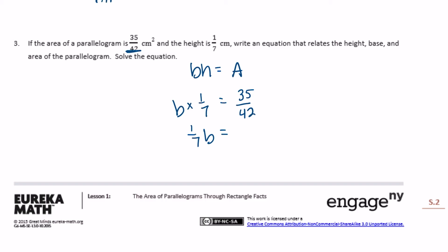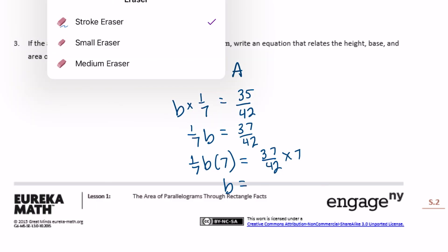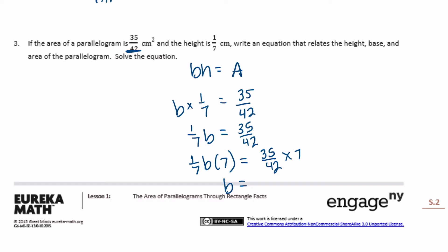We have an equation: 1/7 times the base equals 35/42. We can reverse 1/7 times B by multiplying by 7, so that'll get B by itself. Then we can do 35/42 times 7. So we get B equals 35/42 times 7. I'm gonna make 7 over 1, so 35 times 7 would be equal to, 5 times 7 is 35, carry the 3, 7 times 3 is 21 plus 3 would be 24, so we get 245/42.